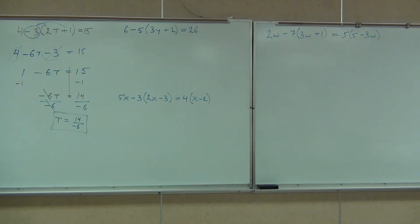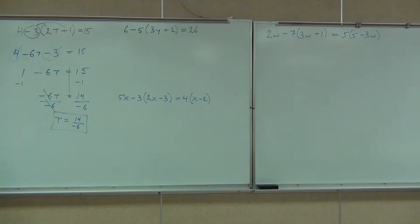The first thing we're doing is trying to simplify both sides of our equation — that means you might have to distribute, you might have to combine like terms. After that, we look to see if we have two variables. If we do, we get rid of the smaller one. Then we get rid of the constant term by addition or subtraction, and finally we divide. That's our process.